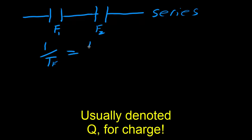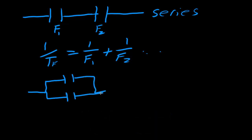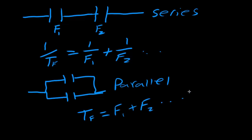So: one over the total capacitance equals one over C1 plus one over C2, and so on. This is the exact same equation as resistors in parallel — except don't get confused, because this is for capacitors in series. If you have two capacitors in parallel instead, the equation looks like resistors in series: the total capacitance simply equals C1 plus C2 and on and on. So the equations are the same as resistors but flipped between series and parallel.